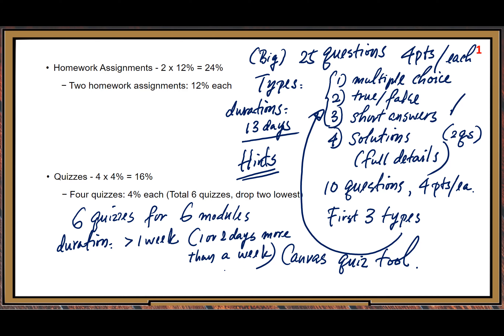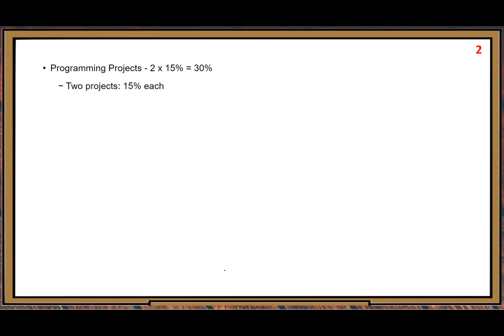If you have questions, just type in the chat area. Moving to the next item: Programming Projects — two projects. In Module One I talk about one topic that can be used for our first programming project. After Module One, we can prepare for Project One. After Quiz One I can assign you Project One.